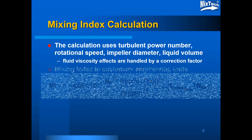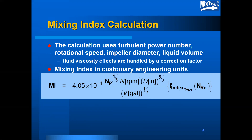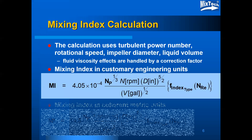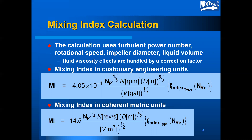Fluid viscosity effects are handled by a correction factor. The mixing index in customary units is equal to a coefficient of 4.05 times 10 to the minus fourth, times the impeller power number to the one-third, times the rotational speed in RPM, times the impeller diameter in inches raised to the five-halves, divided by the square root of the volume in gallons. The mixing index can also be calculated in coherent metric units, where the values of the variables change as does the coefficient.